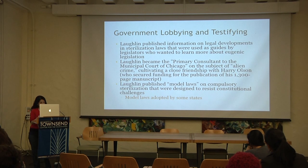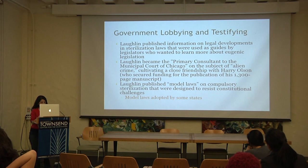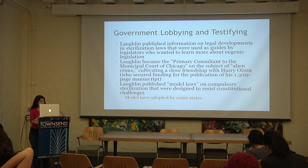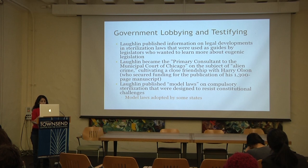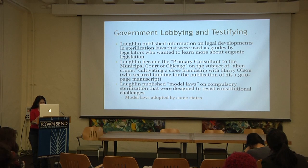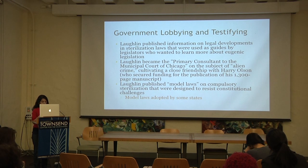Laughlin published and gathered information on legal developments in sterilization legislation, used as guides by legislators. He became the primary consultant to the Municipal Court of Chicago on alien crime and cultivated a close friendship with Judge Harry Olson. But his most influential role was as the expert eugenics agent for the House Committee on Immigration and Naturalization, a position awarded by his friend, the committee's chairman, Albert Johnson.